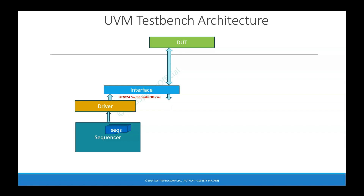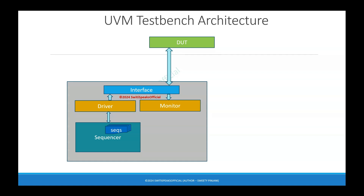When you give some input to the design, it will generate some output. You need to observe and monitor that output. The component which does that is called the monitor. The main job of the monitor is to monitor the outputs of your design. So the interface, driver, monitor, sequencer, and sequences are all part of your UVM component called the agent.